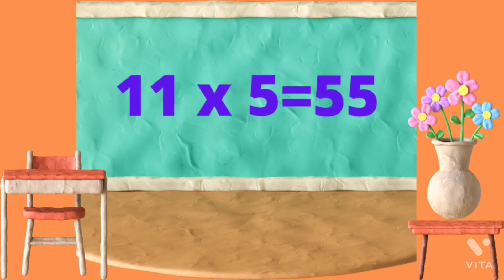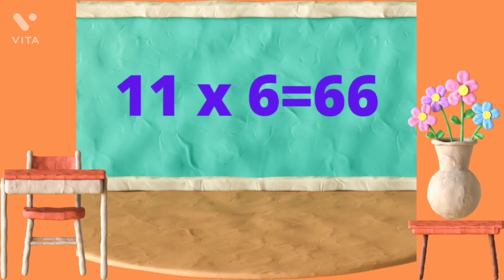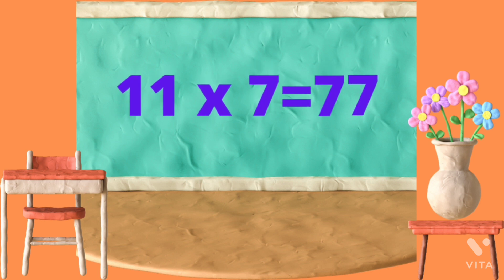11 fives are 55. 11 sixes are 66. 11 sevens are 77.